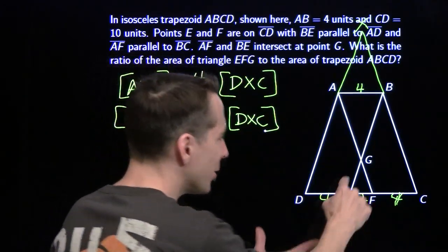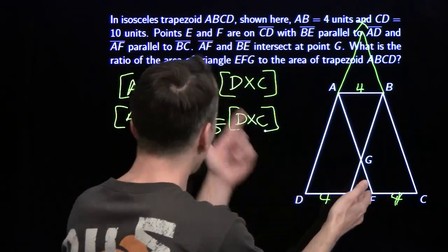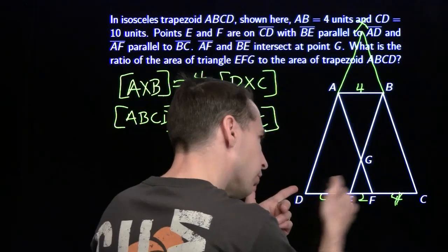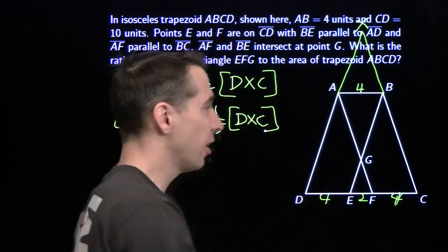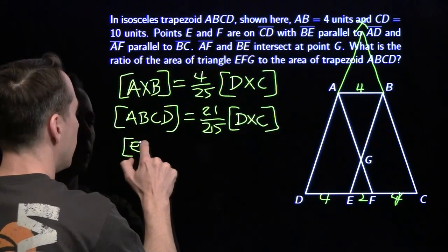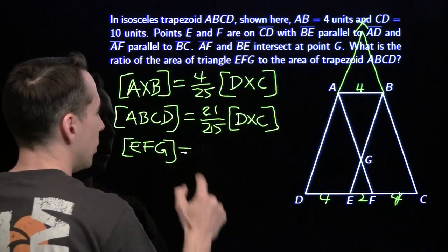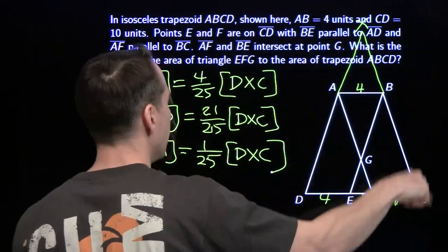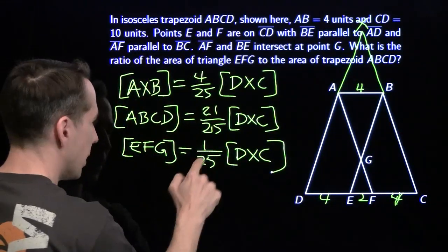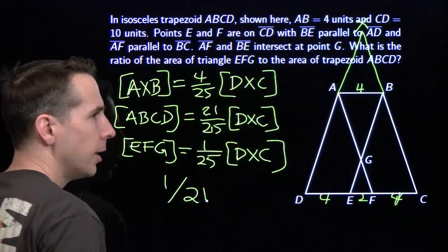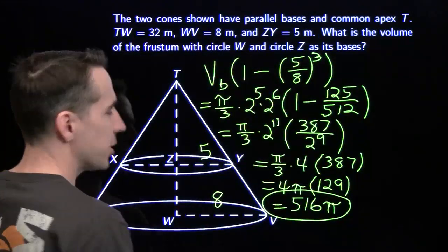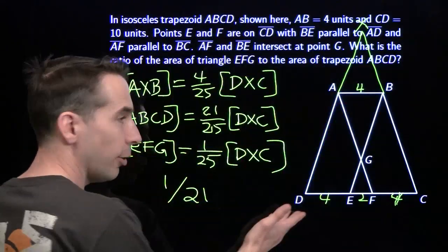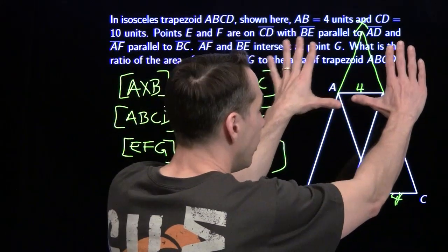And we've got more similar triangles. The little triangle EFG right here is similar to the big triangle — from the very beginning of the problem. Its side down here is 2, and the whole thing is 10, so its side lengths are 1/5 of that of the whole triangle. So its area is the square of 1/5, which is 1/25 of the entire big triangle. And there we go — the ratio of this to this, once again, is 1 to 21.